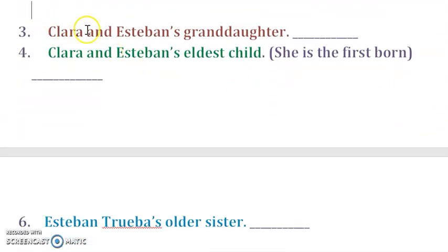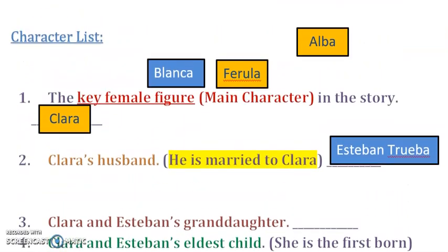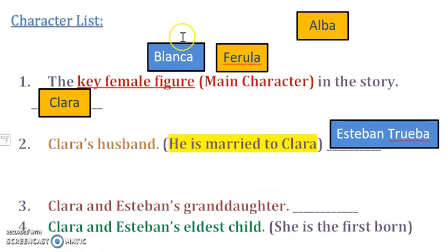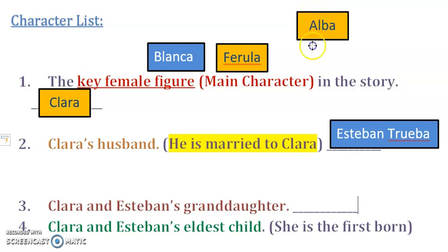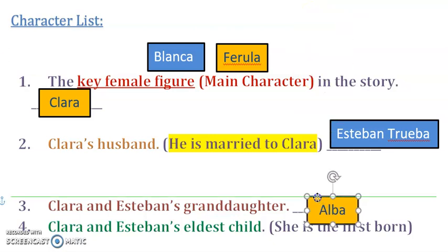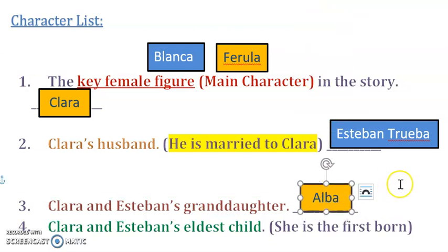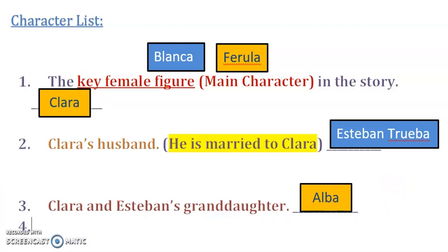Let's proceed to number three: Clara and Esteban's granddaughter. Who among these three — Blanca, Ferula, or Alba — is Clara and Esteban's granddaughter? Okay students, in three, two, one. I hope your guess is right — it's Alba.